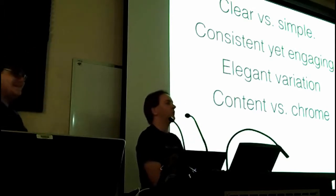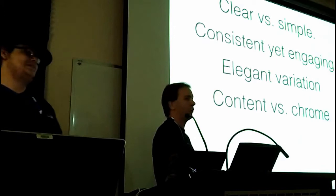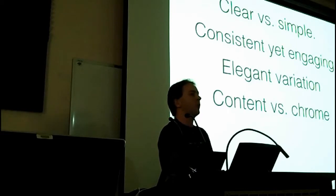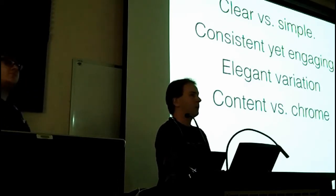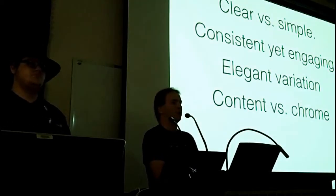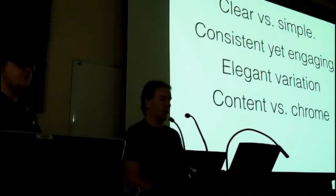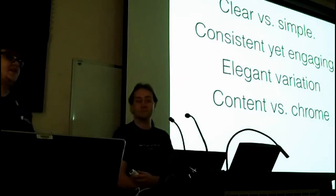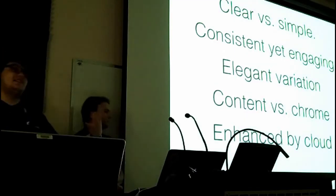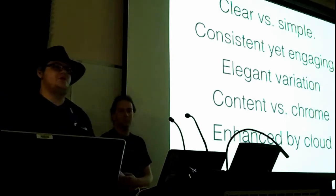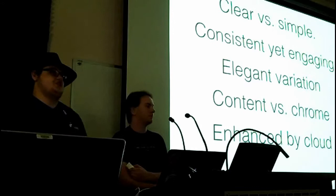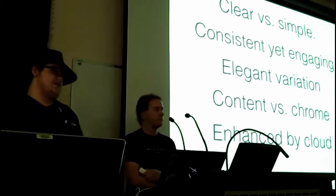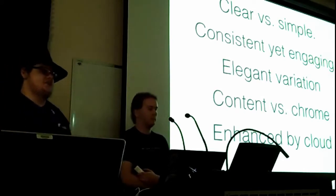Content versus chrome: you've all used the web browser on an Android device. You have the URL bar at the very top of a view, but when you scroll down, the URL bar gets obscured from view. So you're not keeping the URL bar in focus all the time — you're focusing on the content. This can be contrasted with a desktop web browser, where the URL bar stays in view all the time. Another quick tenet is enhanced by cloud. Google strongly recommends that you push as much to the cloud as possible and preserve your state there. The user gets a new device and they want to be able to pick up where they left off on the previous device.